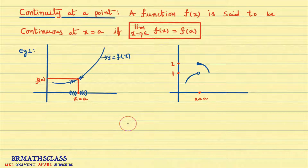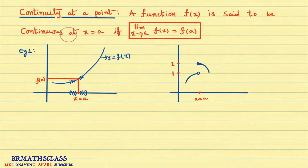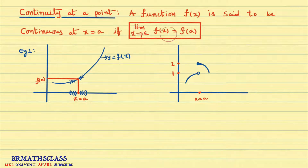First, we will learn the definition of continuity of a function at a point. How we check continuity at a point: a function f is said to be continuous at x equal to a, if the limit as x tends to a of f(x) equals f(a). If this holds, then we say that the function is continuous at x equal to a.